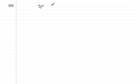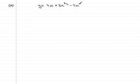Let's look at part A. In the first part we have to find the expression for dy/dx, so just copy out what we've got: y equals 4x plus 3x to the power 3/2 minus 2x squared.